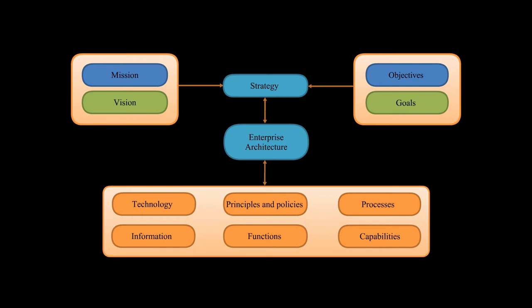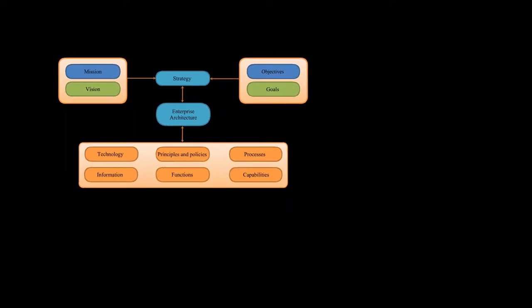Capabilities are expressed in high-level terms and typically require a combination of organization, people, process, and technology to achieve. For example, marketing, customer contact, or outgoing telemarketing. More precisely, enterprise architecture is made up of the following architectures.